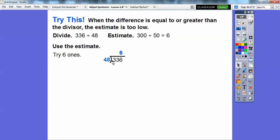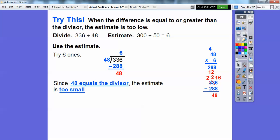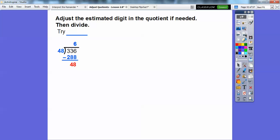We'll multiply 48 times 6. 48 times 6 gets us 288. When we subtract, we get 48. I did the subtraction over here. When this difference, this red 48, equals our blue divisor 48, then our estimate's too low. We can get another group of 48 in here. So we'll increase that 6 to a 7.